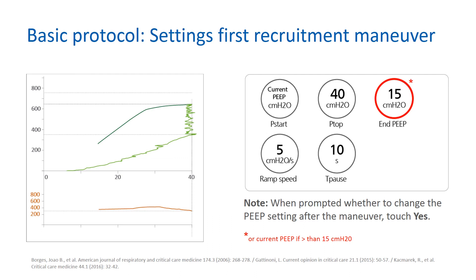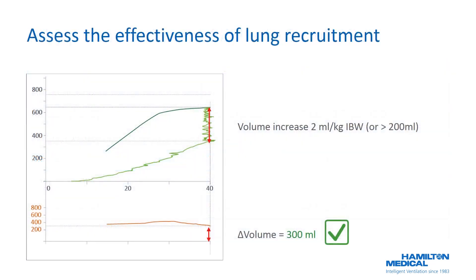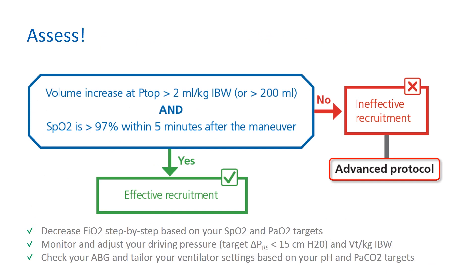Comparing the most relevant papers regarding PEEP setting in ARDS and different PEEP strategies, the average PEEP in the intervention group is around 15 centimeters of water. Papers studying post-lung recruitment PEEP based on lower inflection point and decremental PEEP titration reveal that the average PEEP needed to sustain lung opening following lung recruitment is approximately 15 centimeters of water. To assess the effectiveness of the recruitment maneuver, a measurement of the volume increase at end inspiration during the 10-second pause is required. If the volume increase is greater than 2 milliliters per kilogram ideal body weight, or greater than 200 milliliters, and the SpO2 is greater than 97% within 5 minutes after the maneuver, the maneuver may be considered effective.